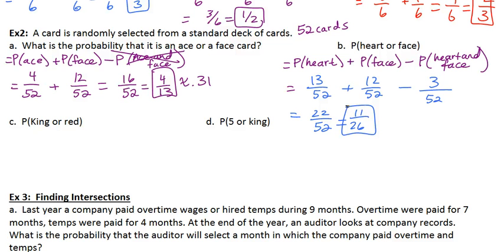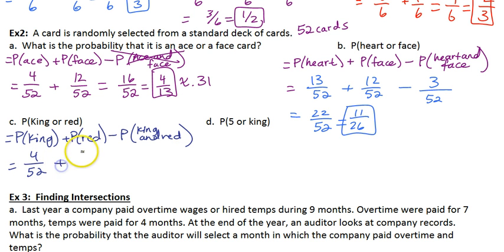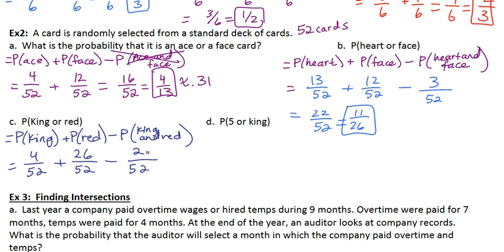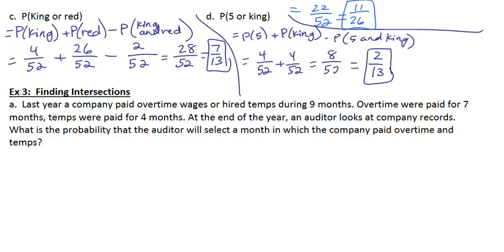Part C: find the probability of a king or a red card. Set yourself up: probability of a king plus probability of red, subtract the probability of king and red at the same time. There are 4 kings, so 4 out of 52. There are 26 red cards because diamonds and hearts. How many kings are red? I've counted the king of hearts and the king of diamonds twice, so there are 2. Subtract that off — you end up with 28 over 52, which reduces to 7 thirteenths. For part D, pause and try it on your own. The final answer should be 2 thirteenths. There is no card that is both a 5 and a king, so there was nothing to subtract — it ended up being 4 plus 4 for the top number.